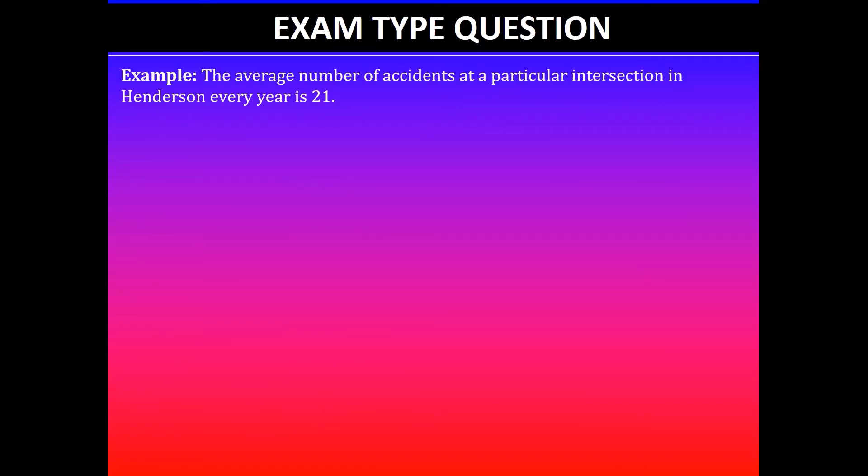So in this question it says the average number of accidents at a particular intersection in Henderson every year is 21. The question says calculate the probability that there are exactly two accidents this month. First, you will need to recall the four conditions.